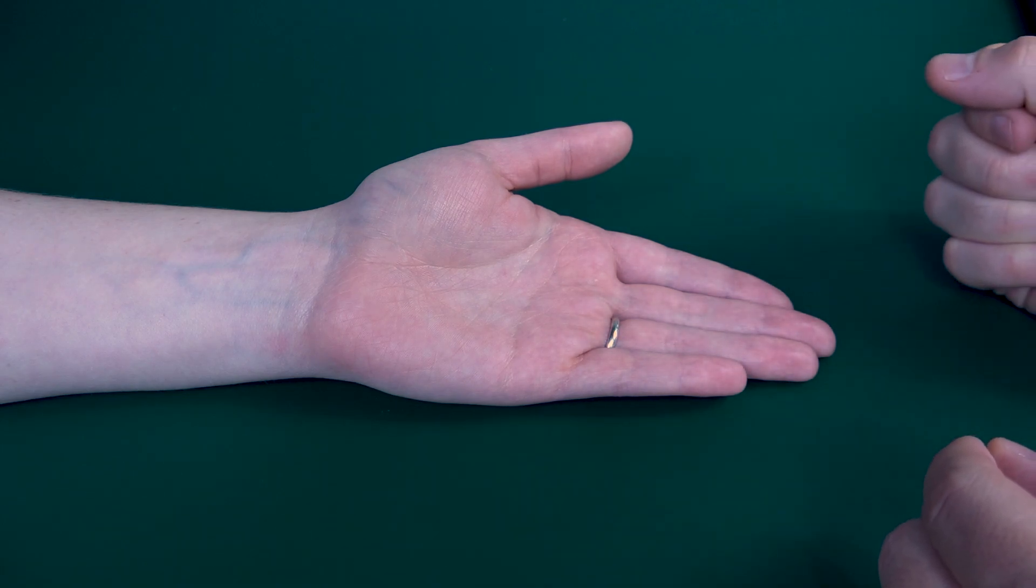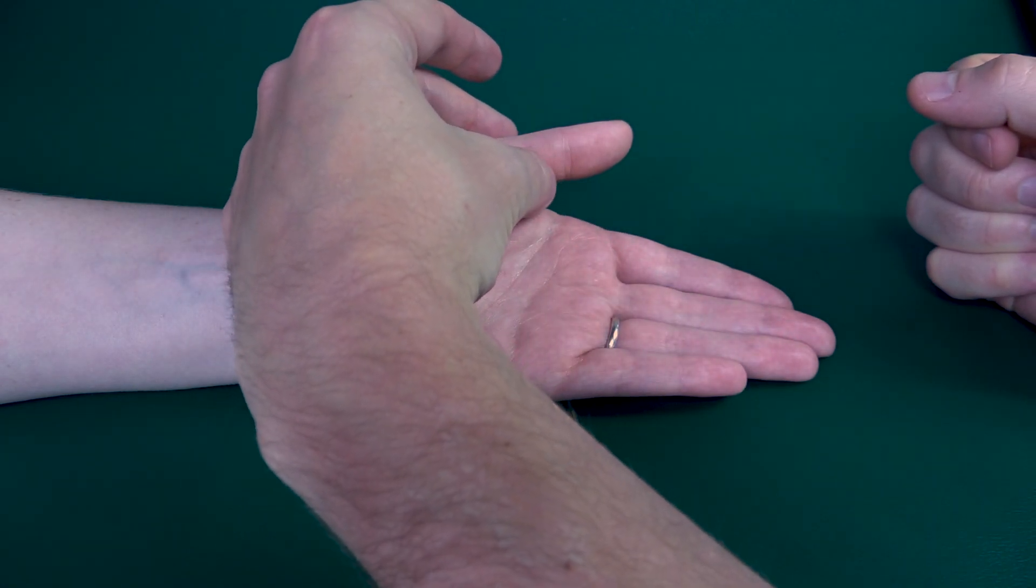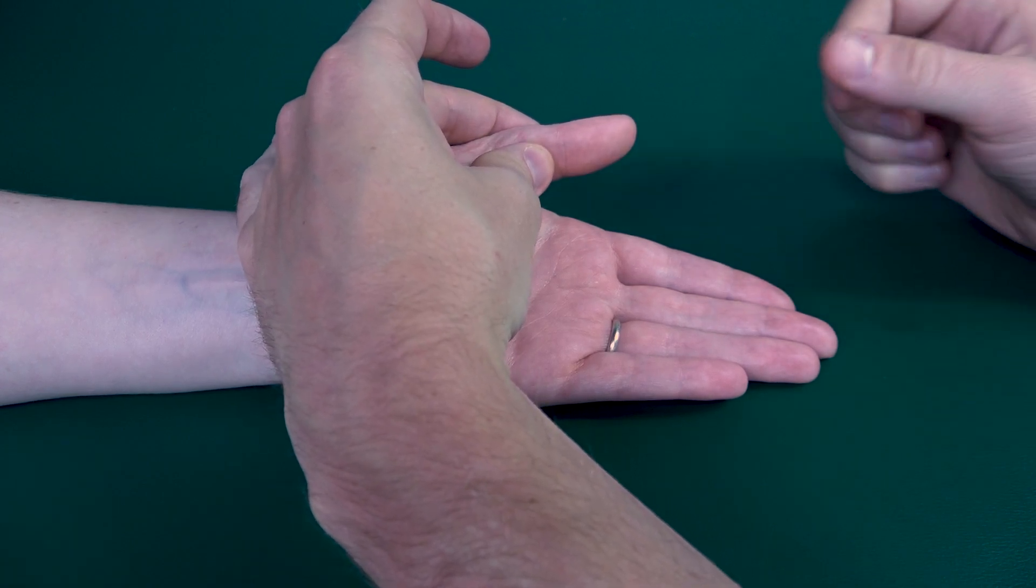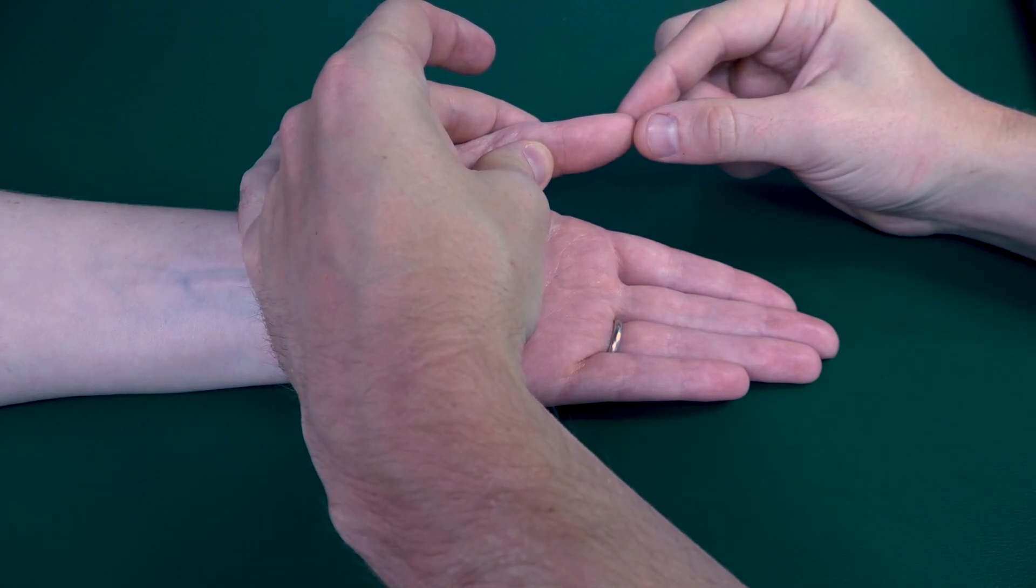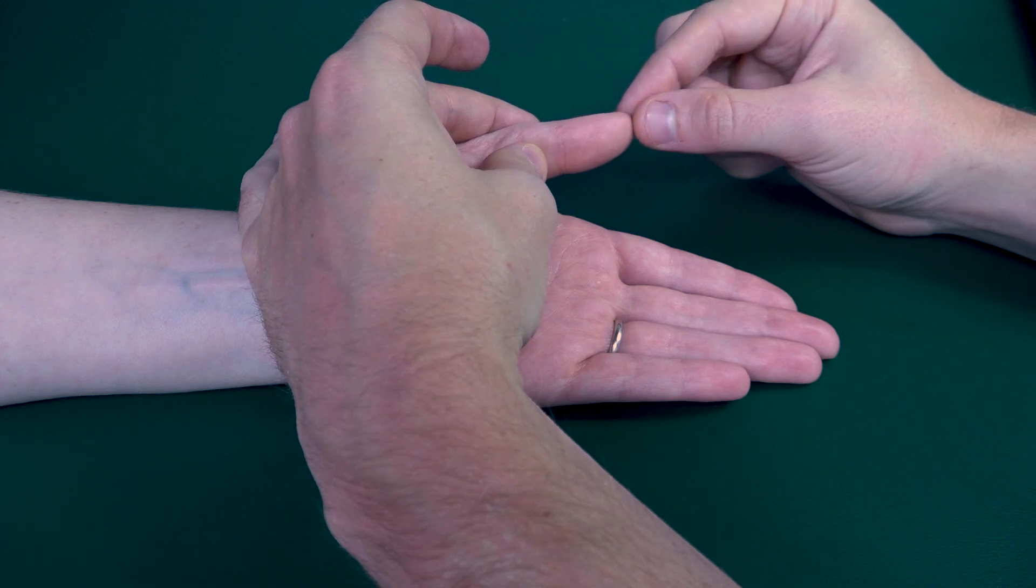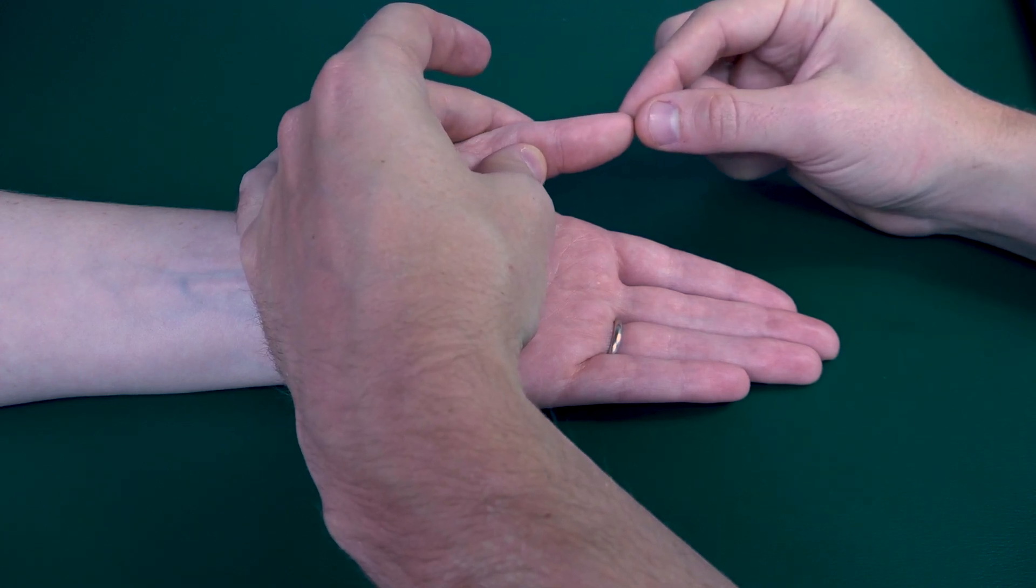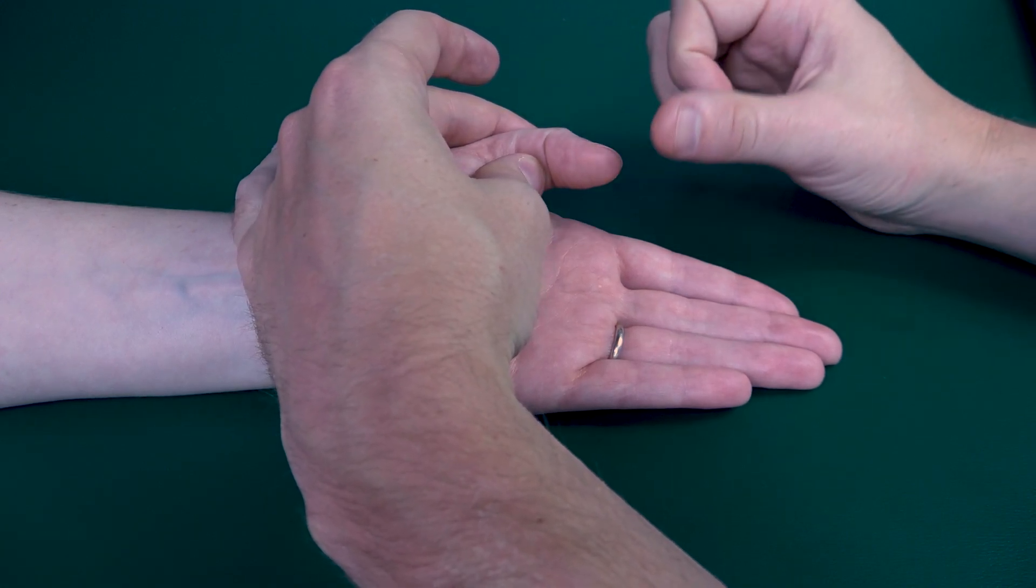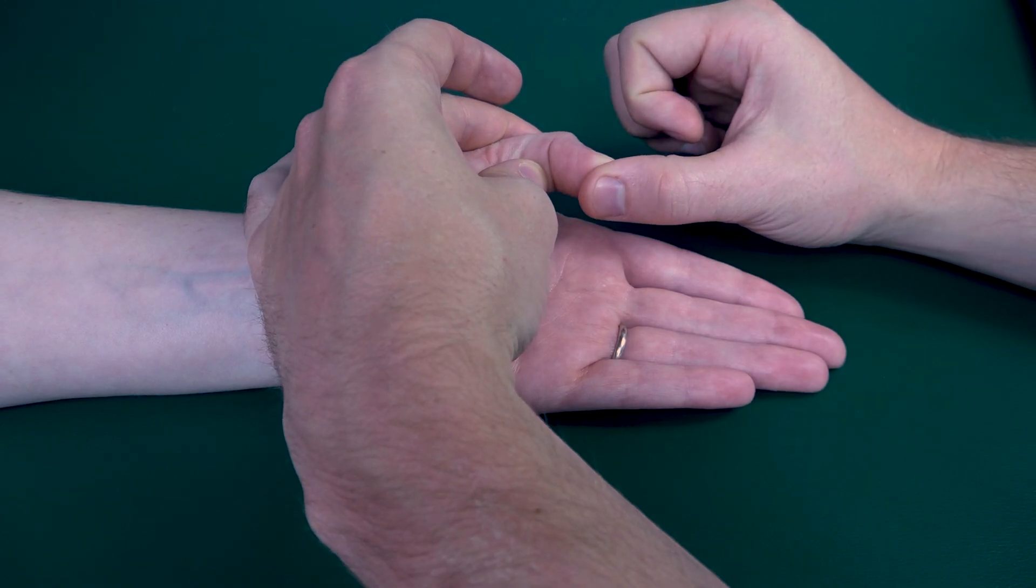The first thing I will do is I will stabilize the proximal phalanx of her thumb and I will apply resistance to the distal phalanx of her thumb while having her perform this position about halfway. So go about halfway in range. Okay, I will apply resistance. So go ahead, resist me.